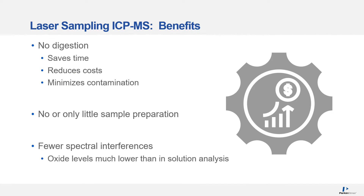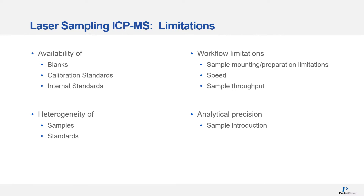Some of the benefits of laser sampling include time savings and less chance of contamination because of reduced sample preparation or handling. There will also be fewer spectral interferences seen because the sample vapor entering the plasma contains no water or acid, reducing the oxide levels you'd find in traditional liquid analysis. As with many analytical techniques, there are also limitations. The availability of blanks, calibration standards, and internal standards can limit the quality of quantitative data.